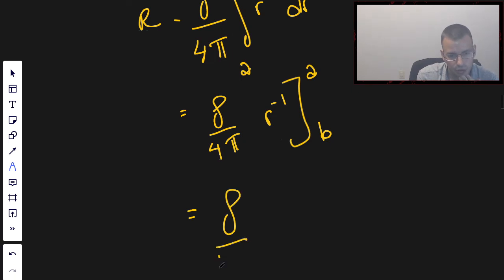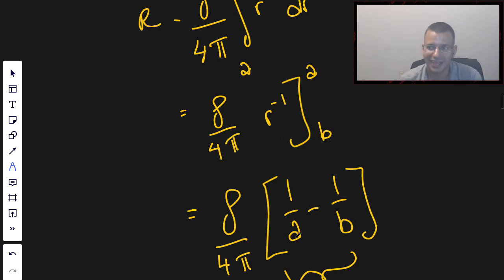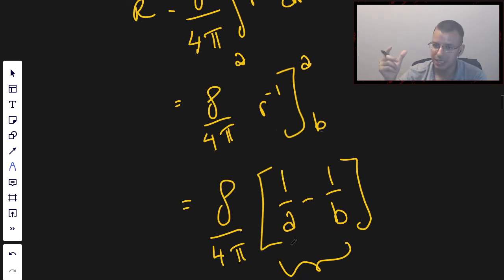Plugging in A and B, we get ρ/(4π) times 1/A minus 1/B. And this is going to be a positive number because we know A is less than B. Therefore, when you divide by a smaller number, you get a bigger overall number, just like one-half is bigger than one-third.